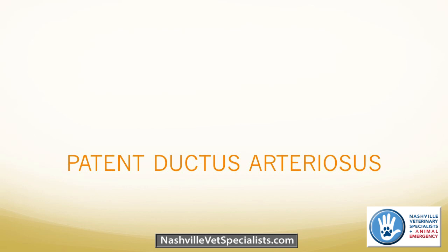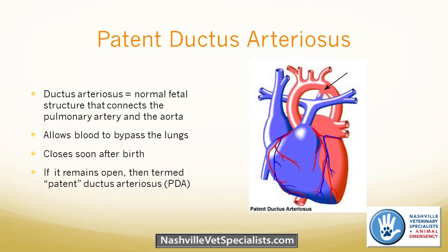The first congenital defect we'll go over is patent ductus arteriosus, or PDA — the most common congenital defect we see in dogs in veterinary medicine. The ductus arteriosus is a normal fetal structure that connects the pulmonary artery to the aorta, allowing blood to bypass the lungs when developing in utero. As soon as an animal or person is born, that ductus is supposed to close down. If it remains open, it's called a patent ductus arteriosus or PDA.